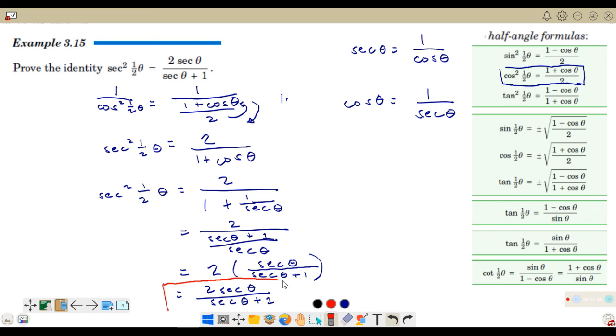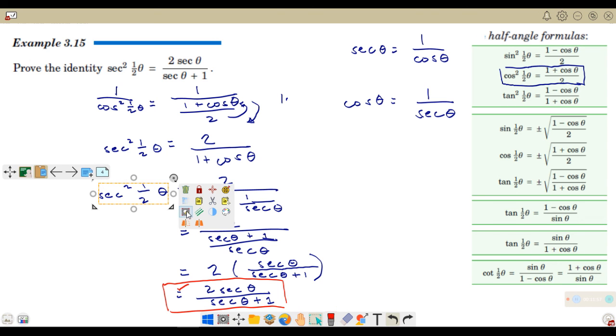Okay? Now, we have proven that the identity secant squared 1 half theta is really equal to 2 secant theta over secant theta plus 1. That was the proof, right? You can do this. So, let's move forward to the next example.